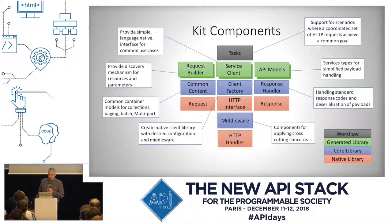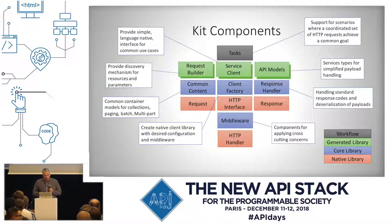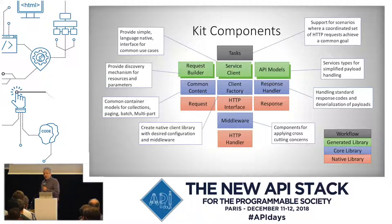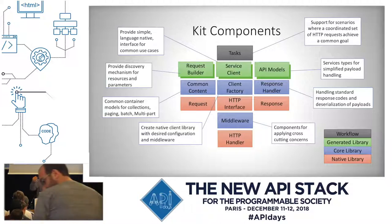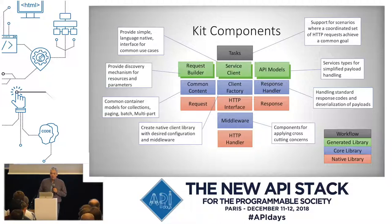Developers know this — they know how to make calls using this library — but some things are just a pain. So we want to make some things easier for them. One way we can do this is with a common pattern supported in a lot of commercial libraries: using a middleware pipeline. Middleware pipelines are great for applying cross-cutting concerns. You can insert extra capabilities there, but still use your native library the way you're used to using it.